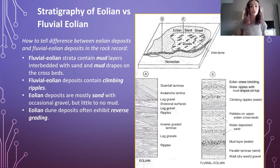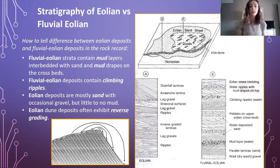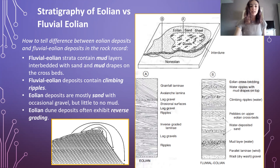Now we'll talk about how to recognize aeolian versus fluvial-aeolian environments. To tell the difference, we can look at the mud content. Fluvial-aeolian strata contain mud layers and interbedded sand and mud drapes on the crossbeds. Additionally, fluvial-aeolian deposits commonly contain climbing ripples, indicative of a more fluvially influenced aeolian system. In aeolian-dominated systems, we'll have mostly sand with occasional gravel, but very little to no mud at all. We can also have reverse grading in aeolian dune deposits, where finer grains are tossed over to the lee side of the dune more often than coarser grains, causing a reverse graded, planar bedded, sand-only deposit indicative of an aeolian-dominant dune field.